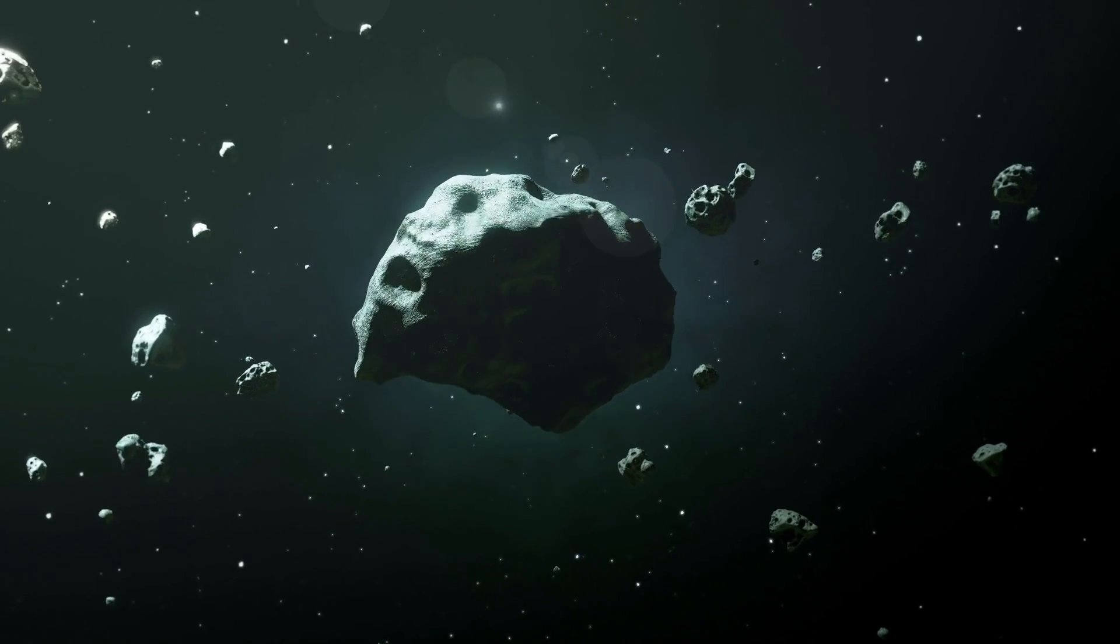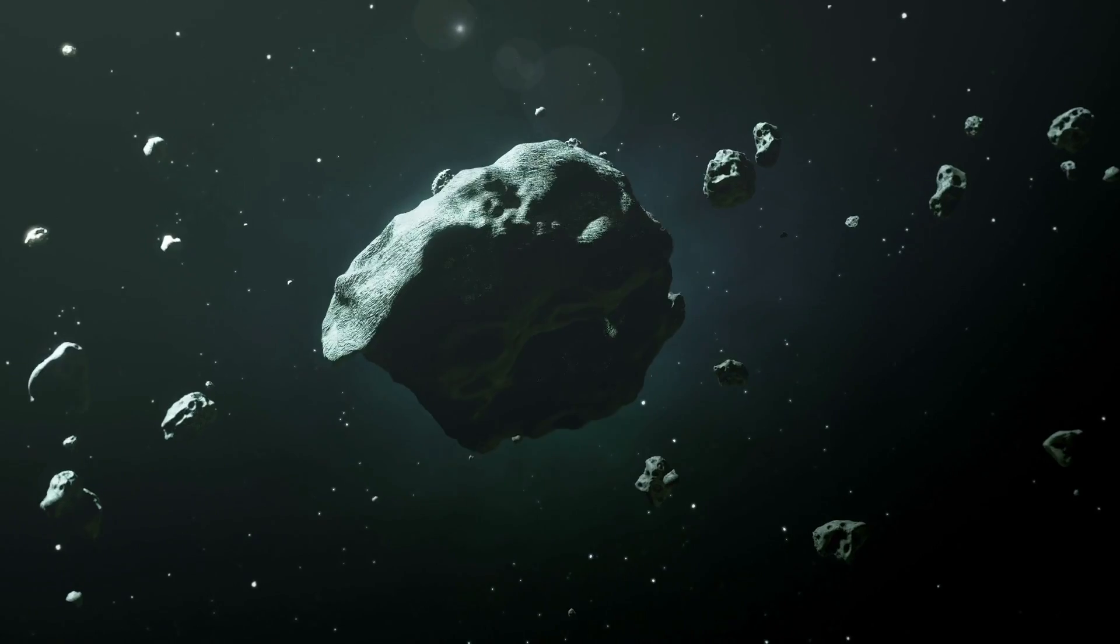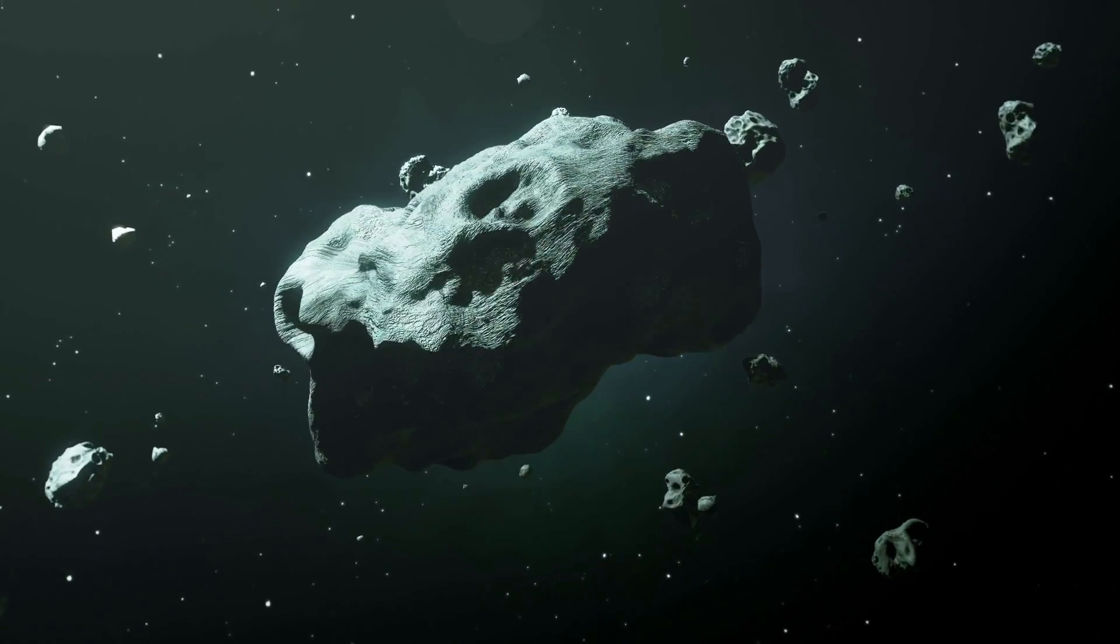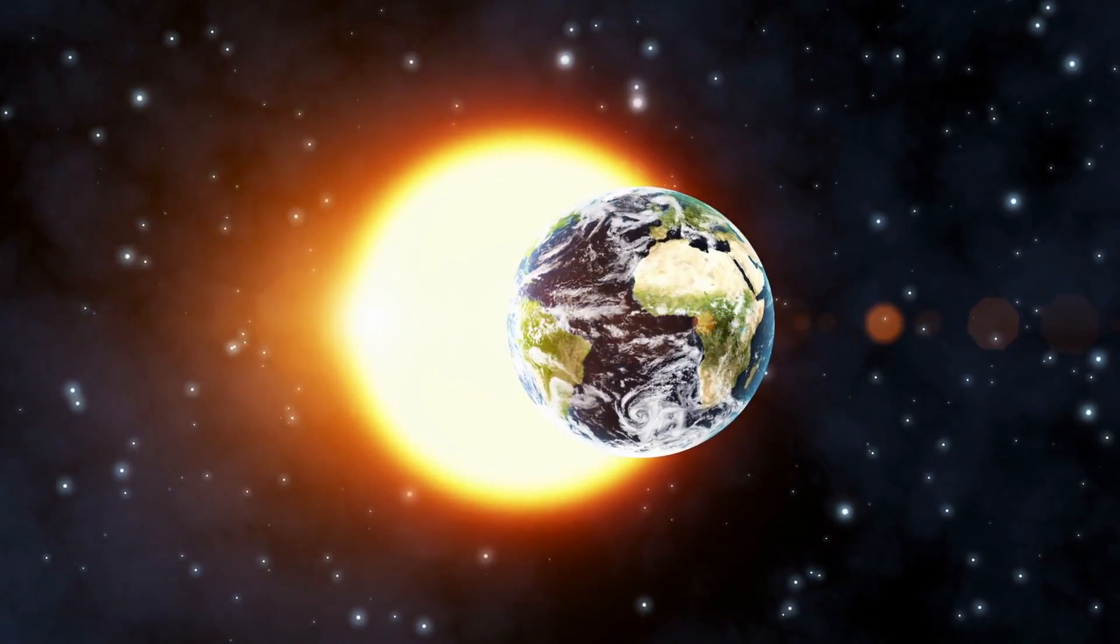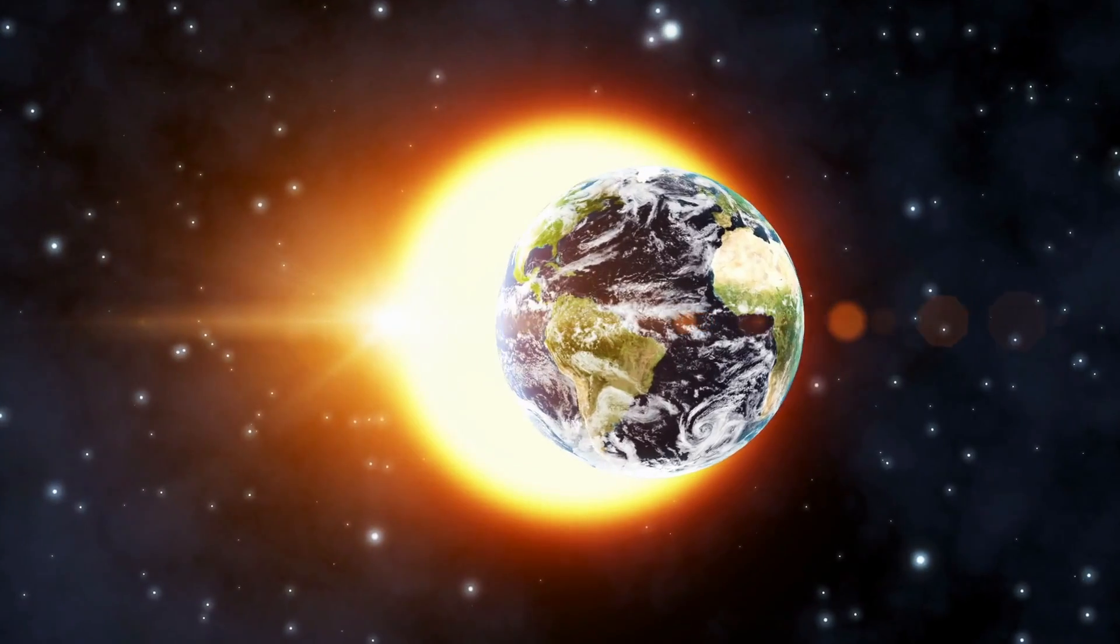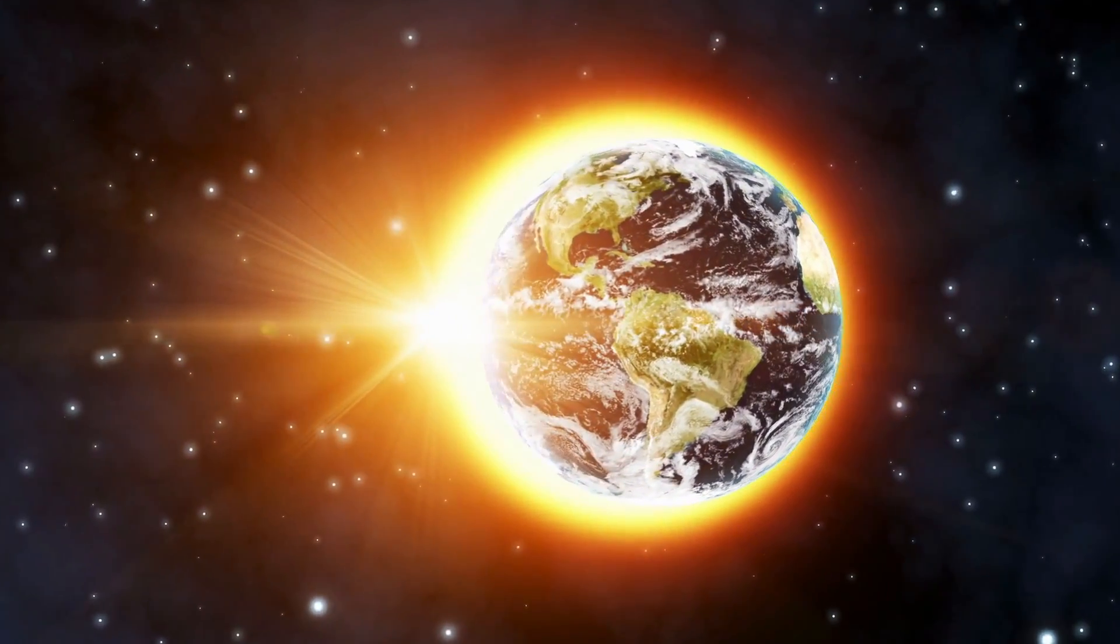Above all, asteroids which cross the Earth orbit fall into this group. However, these orbit the Sun and not the Earth. Therefore, the designation as Moon is wrong.